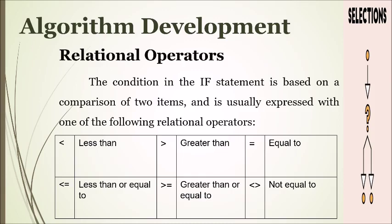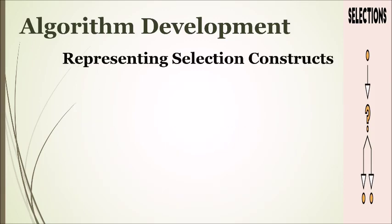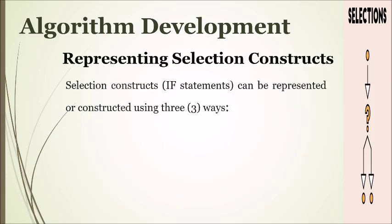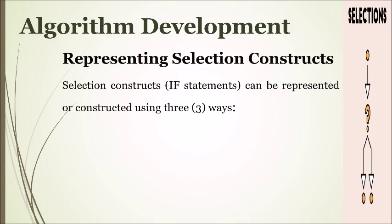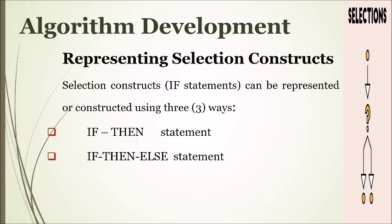In our table we identify various relational operators and their uses. Please note that in computing these are the relational operators that we use to carry out our actions. Selection constructs can be represented or constructed using three ways: if-then statement, if-then-else statement, and if-then-else-if statement.